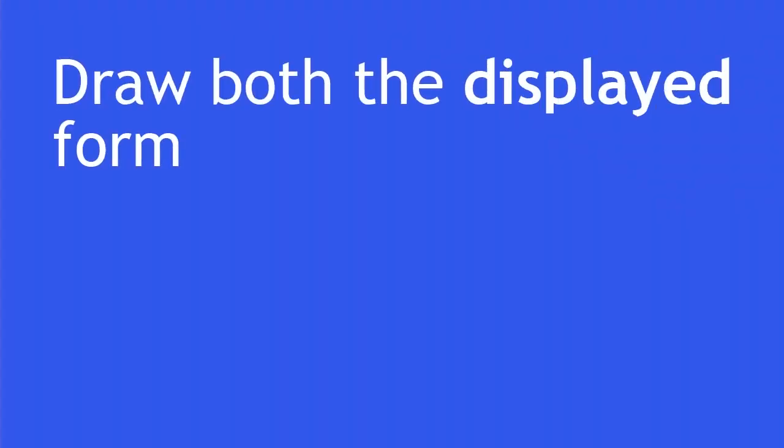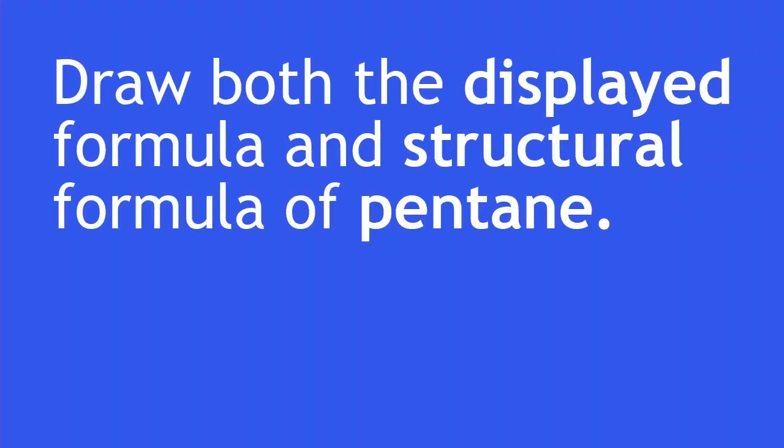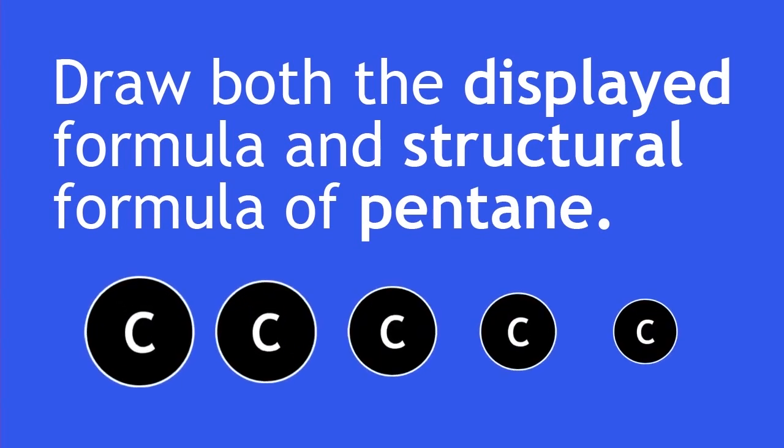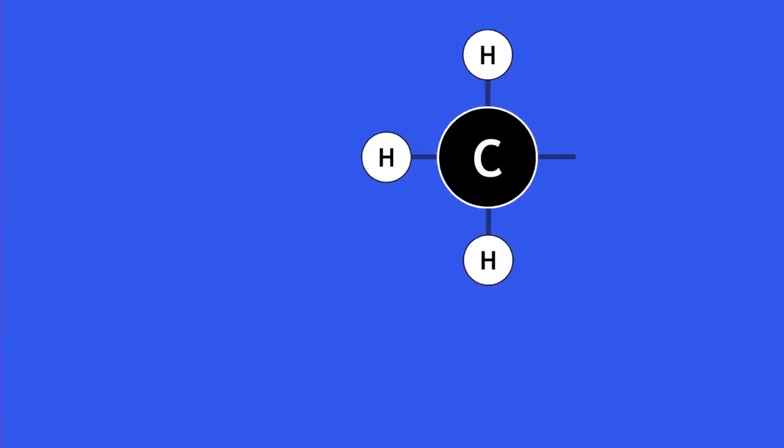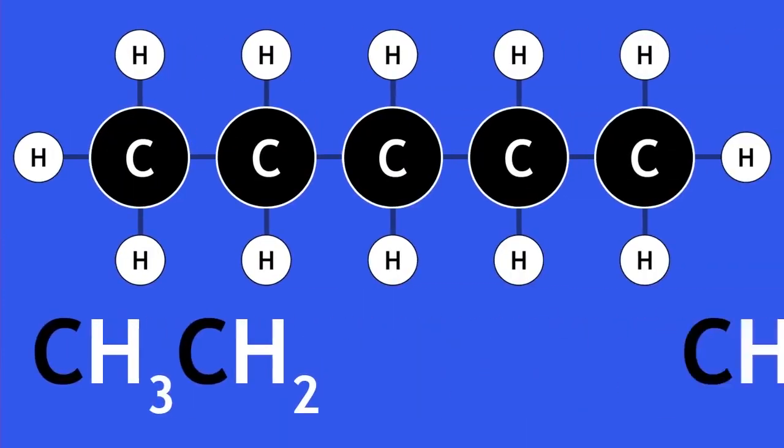Pause the video now, and try and draw both the displayed formula and structural formula of pentane, which has 5 carbon atoms. Here is the displayed formula of pentane, and here is its structural formula.